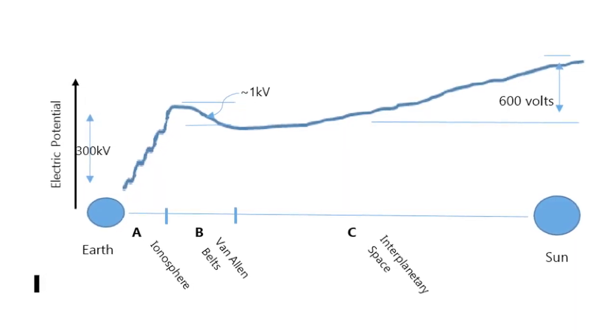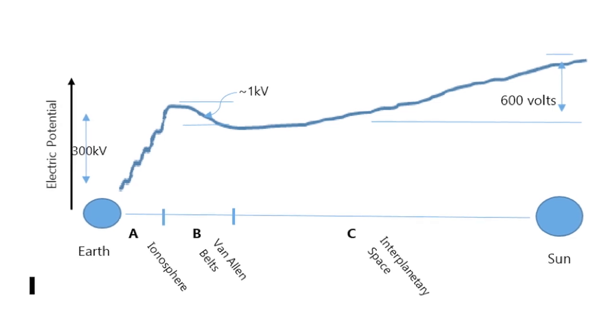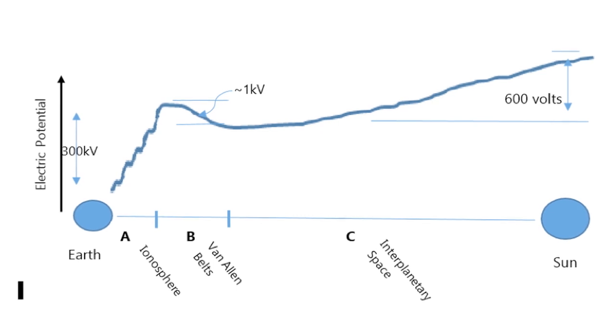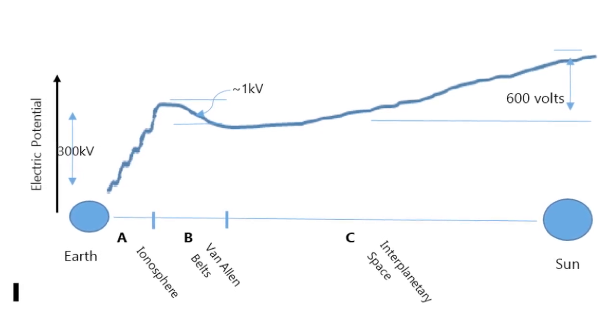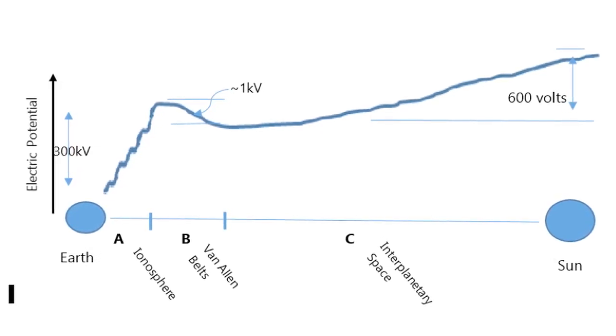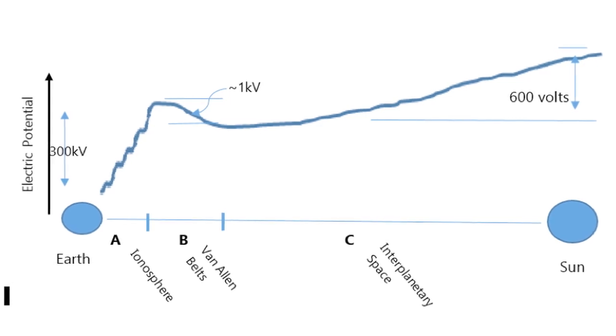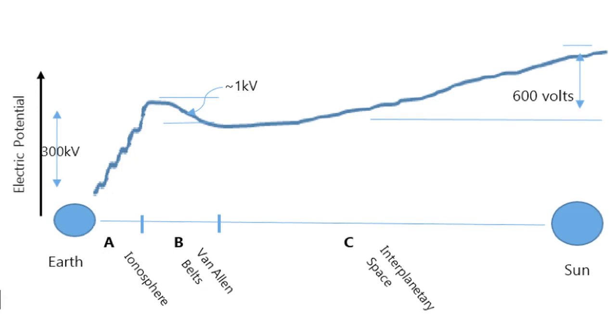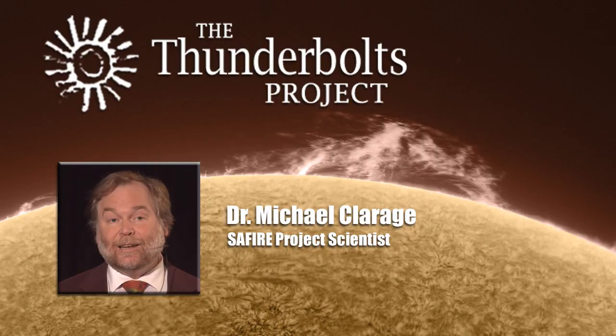The Earth is on the left, the Sun on the right. That squiggly blue line represents the rough structure of electrical potential at any point between a planet and a star. The drawing is quite representational, just trying to sketch out the general shape of things. This model is based partly on experimental data from SAFIRE, partly on known geophysical data, and partly on NASA satellite data of the Sun and solar wind.